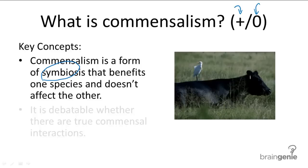A common example of commensalism is the egret and cattle. In this relationship, the egret will sit on the cattle's back and feed on the insects that are flushed out of the grass as the cattle are grazing.